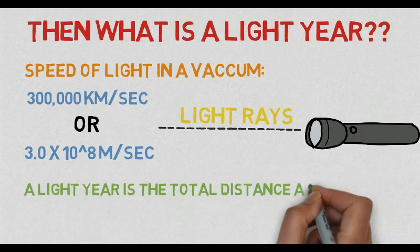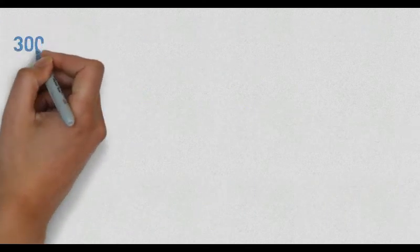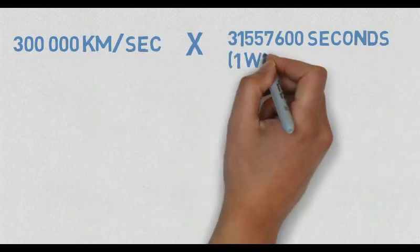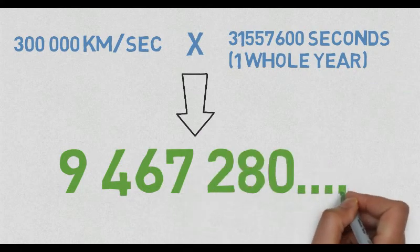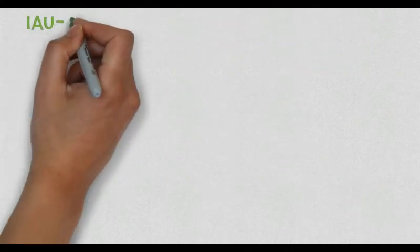That means that if we multiply the speed of light with the number of hours or seconds a whole year holds, we get digits that are enormous. And thus, to simplify the math for space...